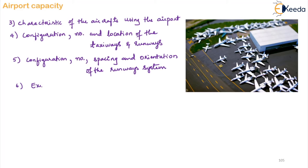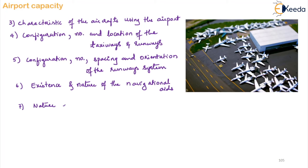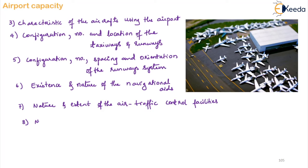The sixth factor is the existence and nature of navigational aids. What navigational aids are available will also determine the capacity of your airport. The seventh factor is the nature and extent of air traffic control facilities — based on those, your airport capacity will also depend.